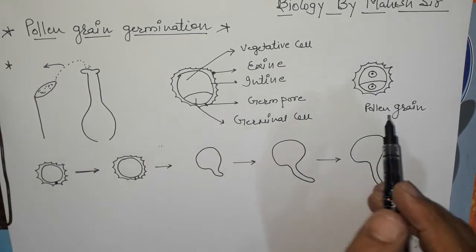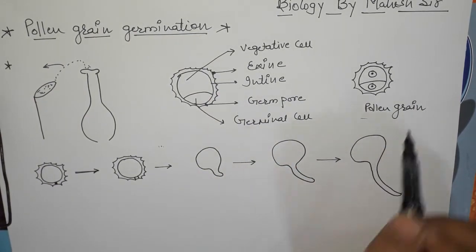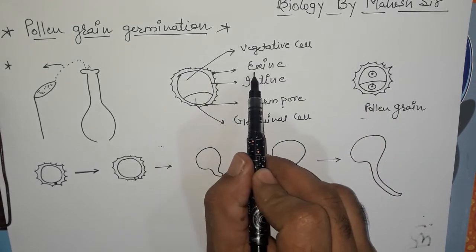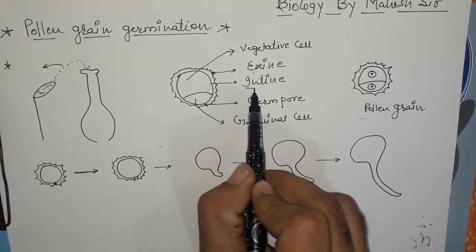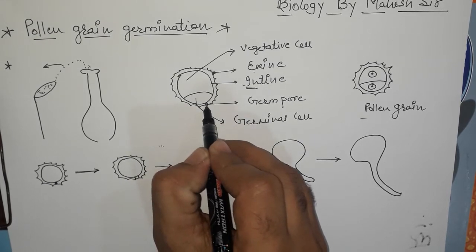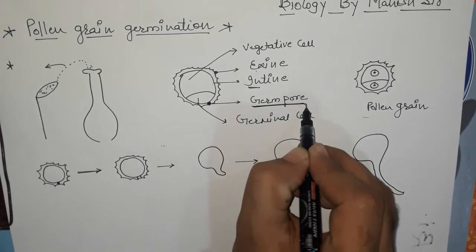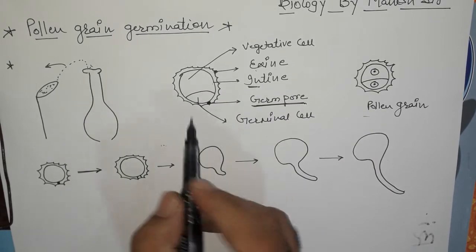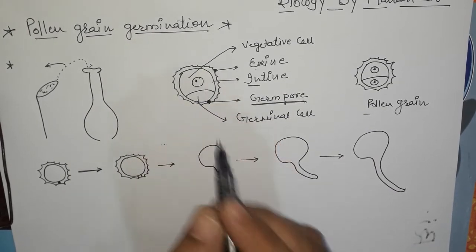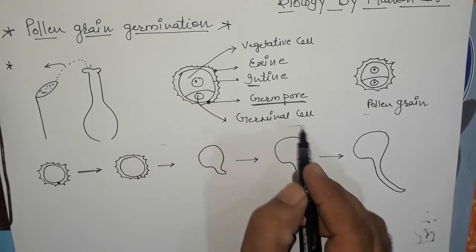We will first discuss the structure of pollen grain. The outer structure is called exine, the inner structure is called intine, and the pore where the exine is absent is called the germ pore. There are two cells: one cell is called the vegetative cell, and another cell is called the germ or germinal cell.